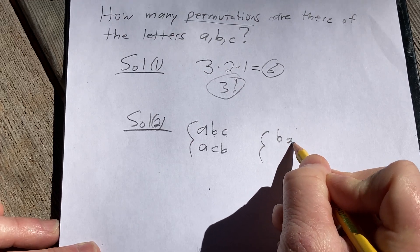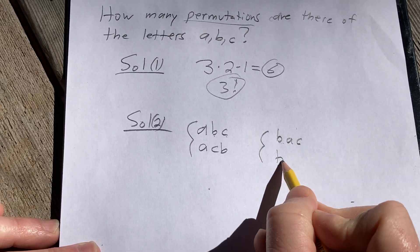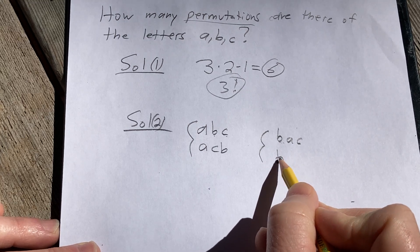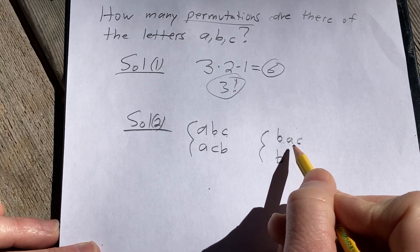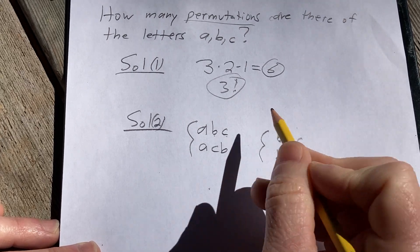So, we have B, A, C. That's one permutation that starts with the letter B. The other one would be, we keep B fixed because we're starting with the letter B, and we permute these other two elements. So, C, A. These are all the permutations that start with the letter B.